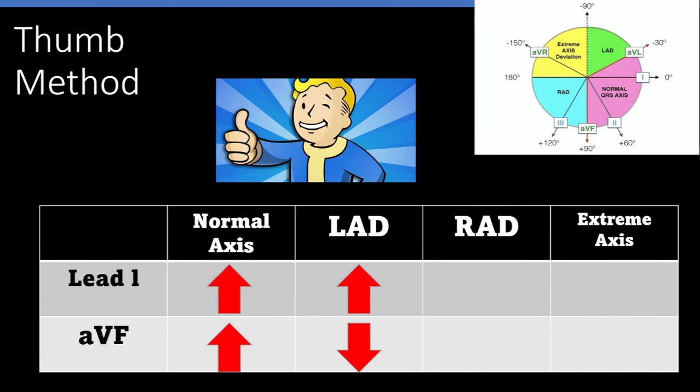For right axis deviation, look at lead one, which is going to be negative, so put your left thumb down. AVF is positive, so put your right thumb up. Thumbs are heading right towards each other, so right axis deviation. For extreme axis deviation, lead one is down and AVF is down. Your patient's going down, down, down, having a really bad day.